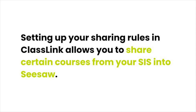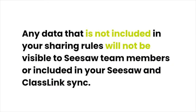Setting up your sharing rules in ClassLink allows you to share certain sections from your SIS into Seesaw. Each section shared will be made into a class in your Seesaw for Schools dashboard. It's important that your sharing rules are accurate, as any data not included in your sharing rules will not be visible to Seesaw team members or included in your Seesaw and ClassLink sync.